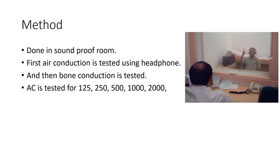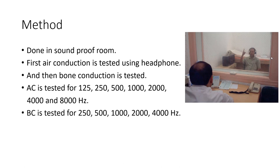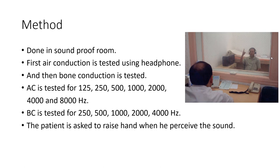Air conduction is tested for different frequencies: 125, 250, 500, and up to 8000 hertz. The audiometer produces these frequencies and can change the intensity for each one. After testing air conduction, we test bone conduction from 250 to 4000 hertz. The patient is asked to raise their hand when they perceive the sound. Asking the patient to look away decreases bias — otherwise, even if not actually listening, they may raise their hand.